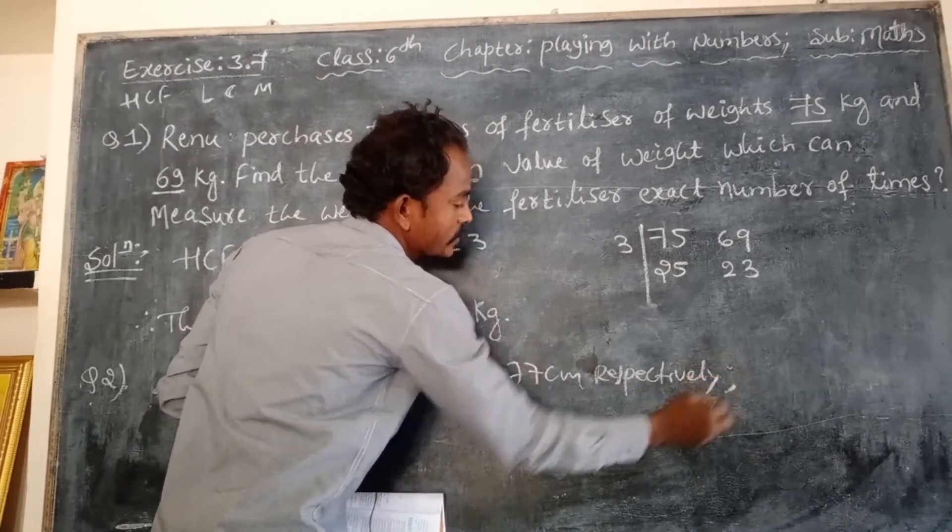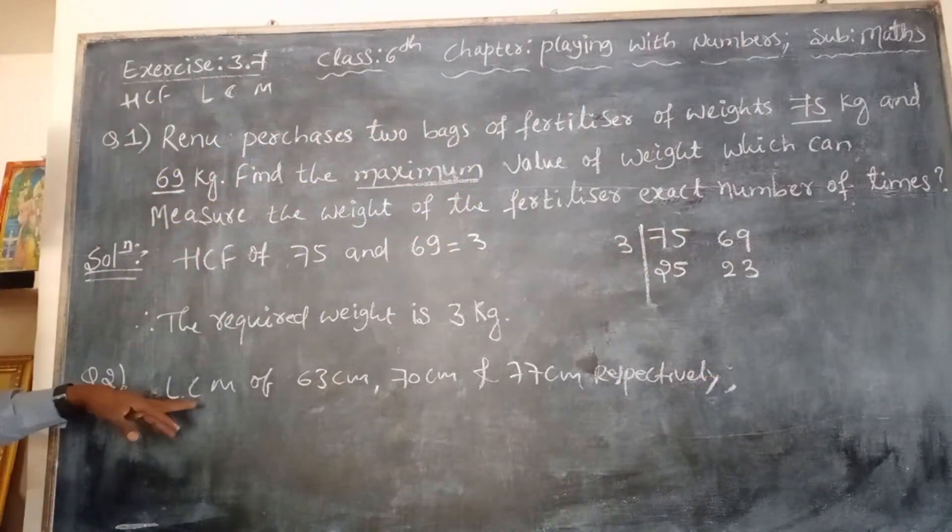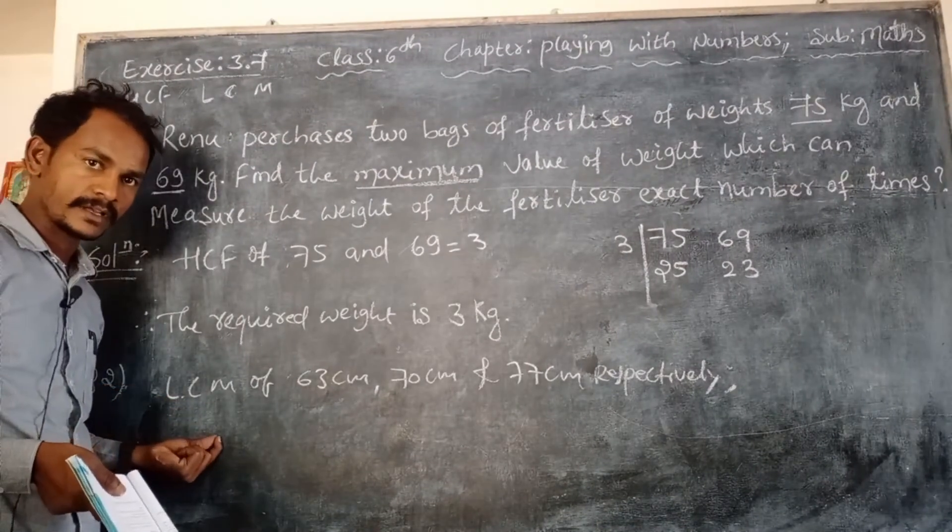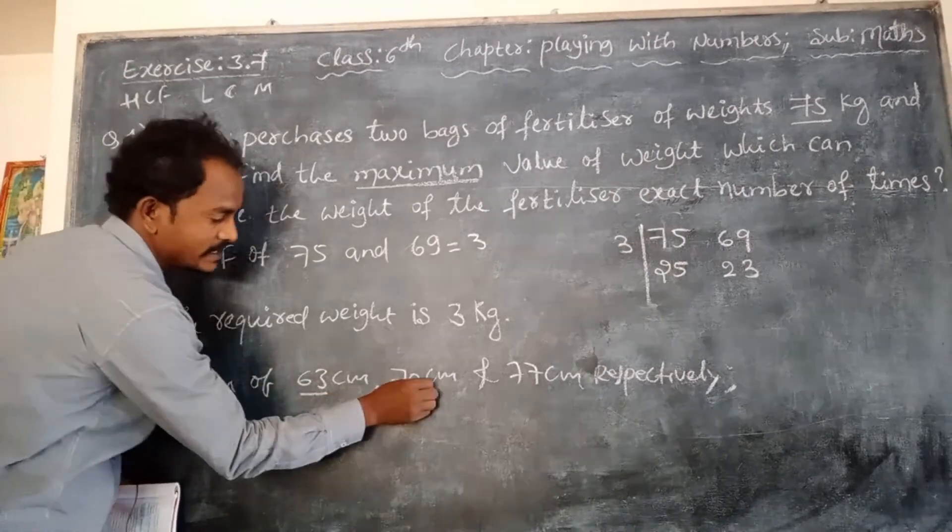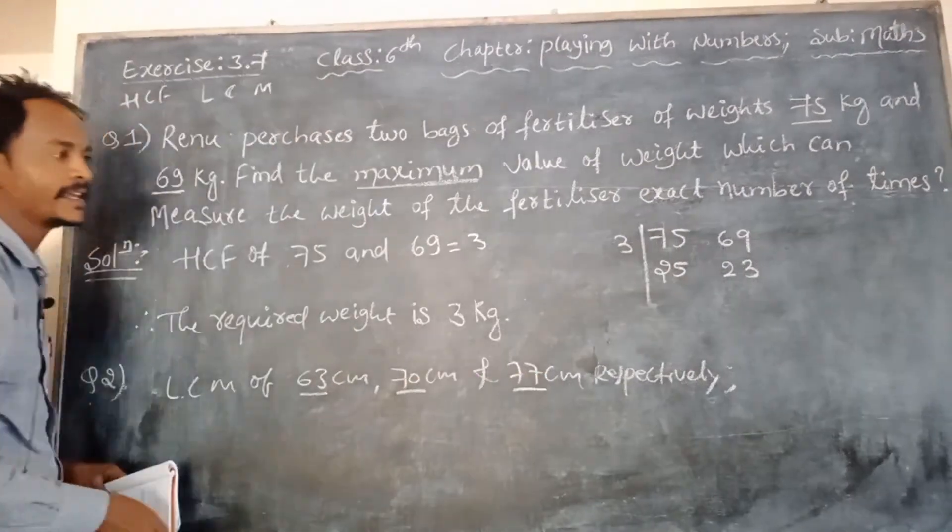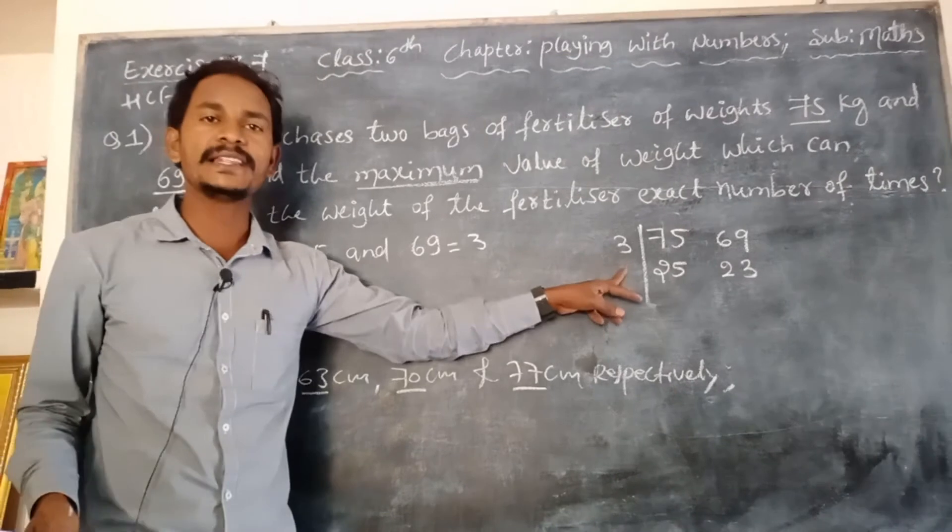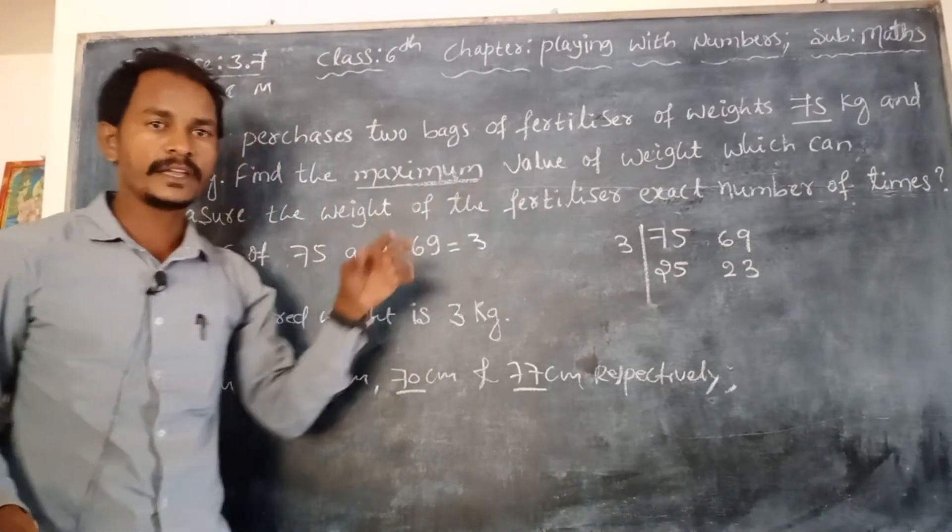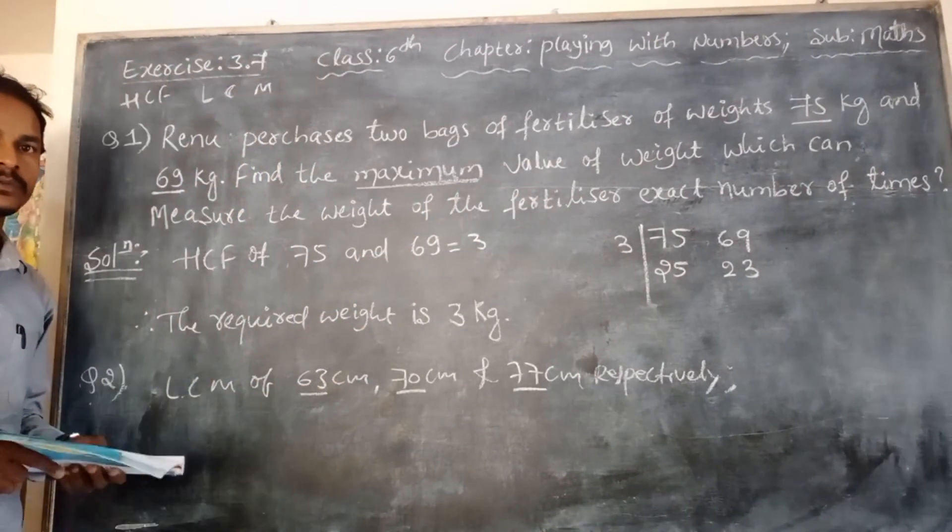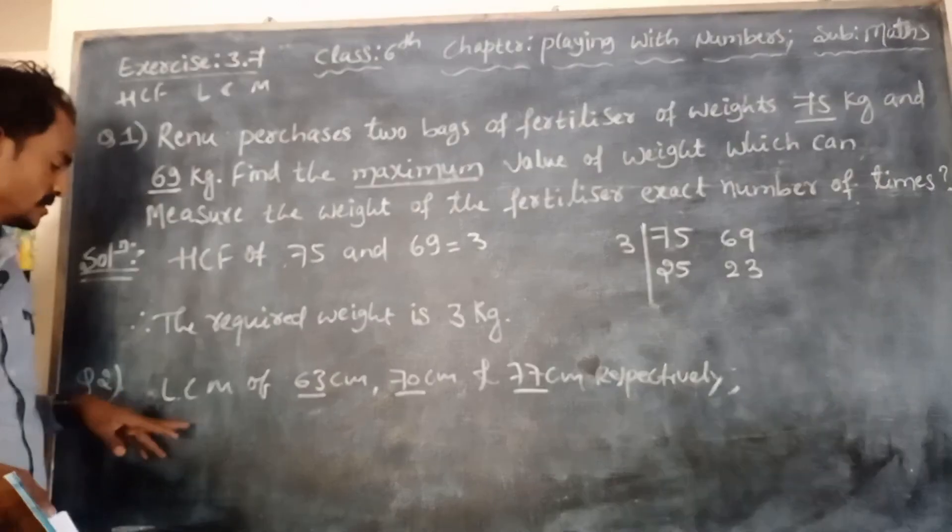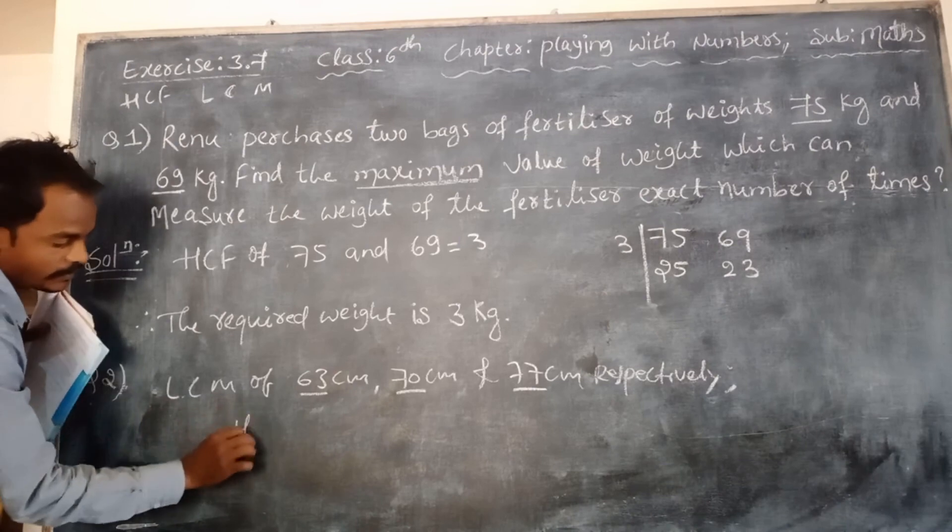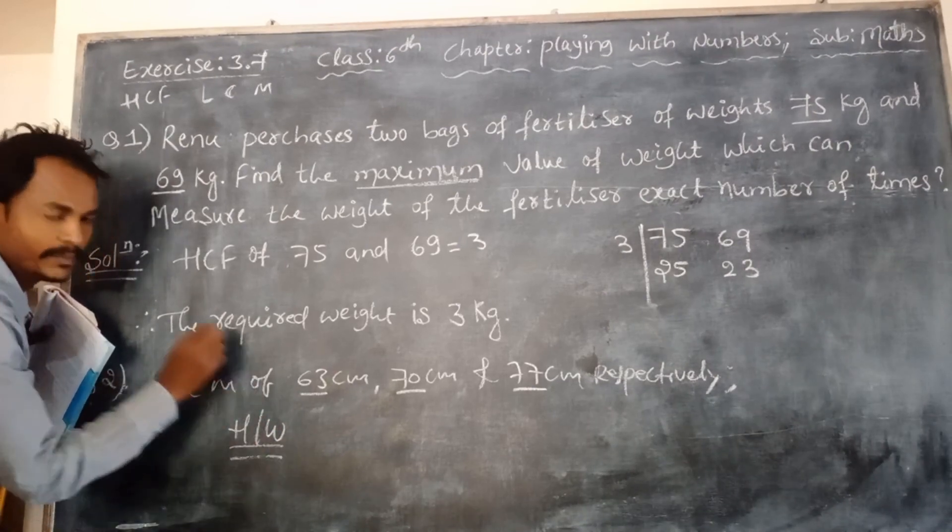So this problem is same as the other. This is your homework. Just find the LCM of 63, 70, and 77. Already LCM you learned in previous class discussion. So this one is homework. Same problem.